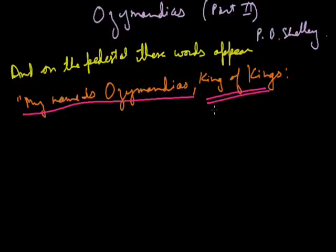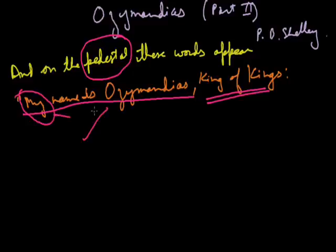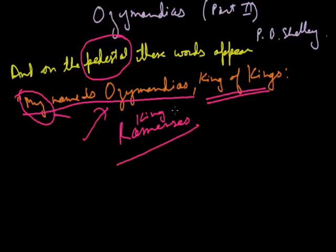Pedestal is the platform on which the statue was raised. On the base it was written: My name is - my over here has been referred to Ozymandias, that is King Rameses. My name is Ozymandias, King of Kings. King Rameses thought himself to be supremely powerful.